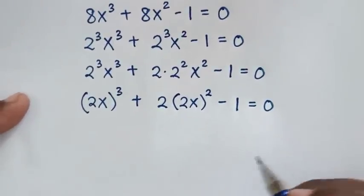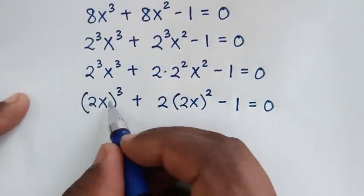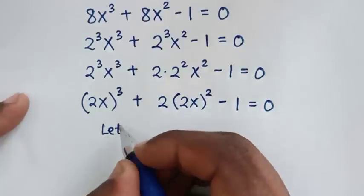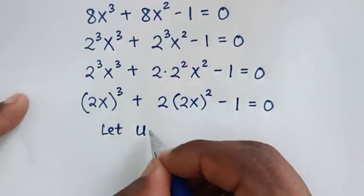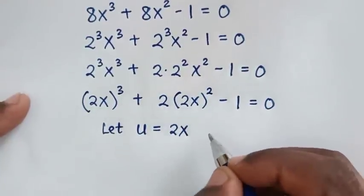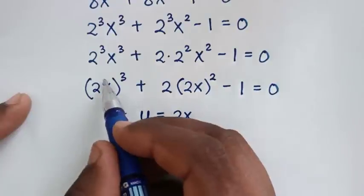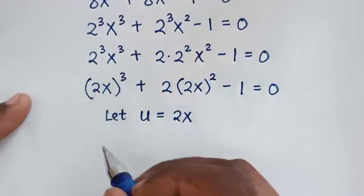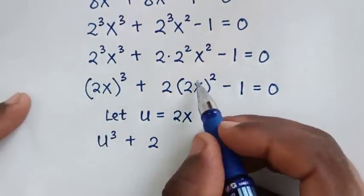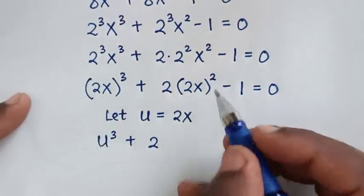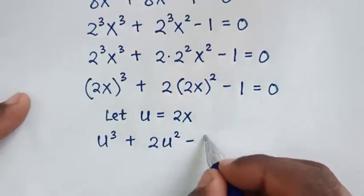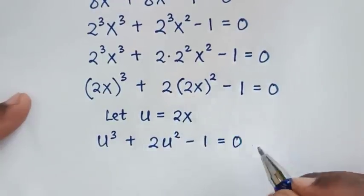In the next step, 2x is common, so we use substitution. Let u = 2x. Then our equation becomes u³ + 2u² - 1 = 0.